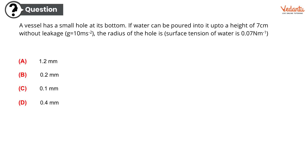Now, let's talk about a vessel. Our vessel has a small hole at its bottom. If water can be poured into it up to a height of 7 cm without leakage, considering that g is equal to 10 m per second squared, and the surface tension of water is 0.07 N per meter, the radius of the hole is. Since the values are given, I am hoping that this is a straightforward formula application.